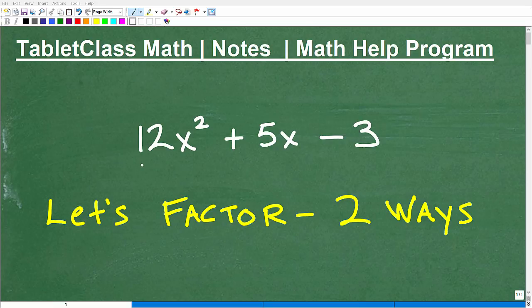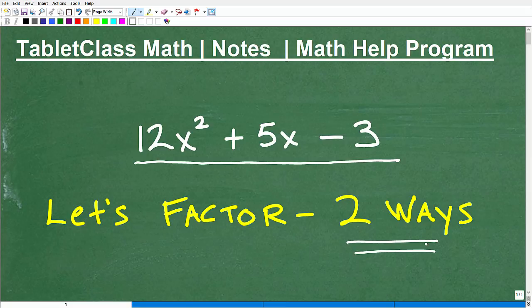Okay, let's factor this trinomial here. So we have 12x squared plus 5x minus 3. And obviously that's going to be the topic for this video. We're going to factor this, but we're going to factor this using two methods.